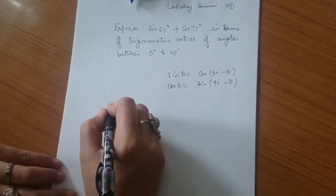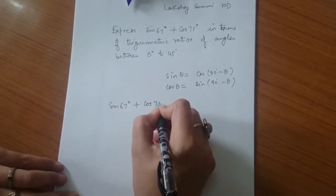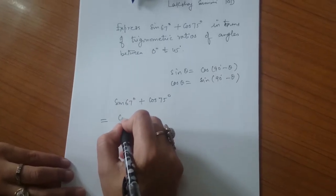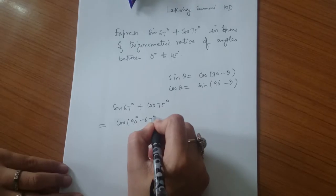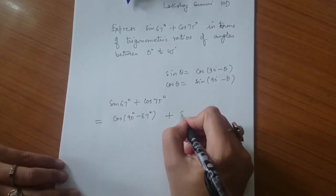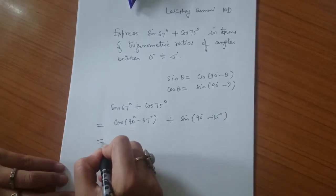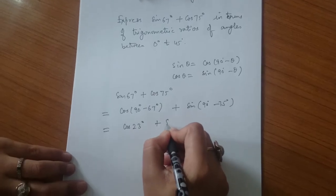Then we write sin 67° equals cos(90° - 67°), and cos 75° equals sin(90° - 75°). Which equals cos 23° + sin 15°.